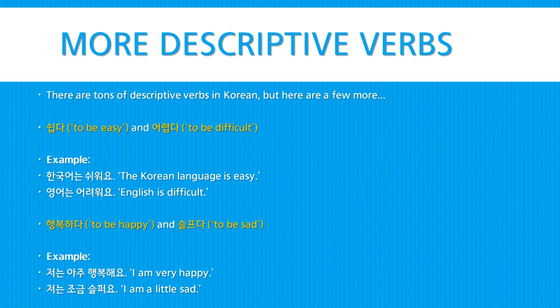Next, we have 행복하다, to be happy, and 슬프다, to be sad. For example, 저는 아주 행복해요 — I am very happy. Or 저는 조금 슬퍼요 — I am a little sad.